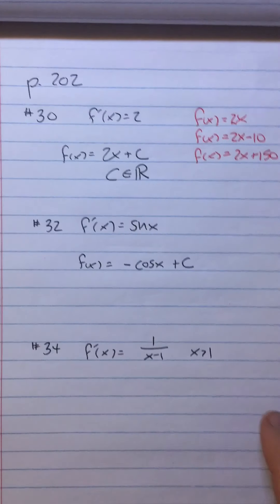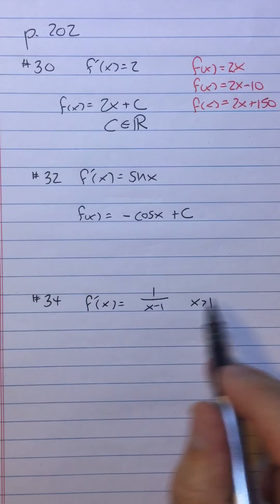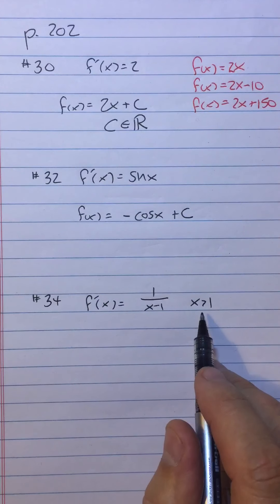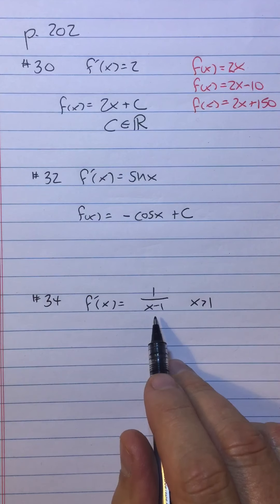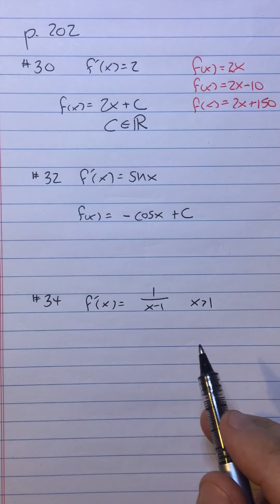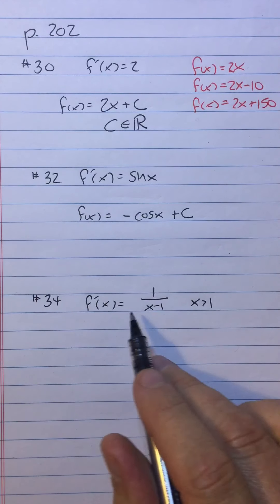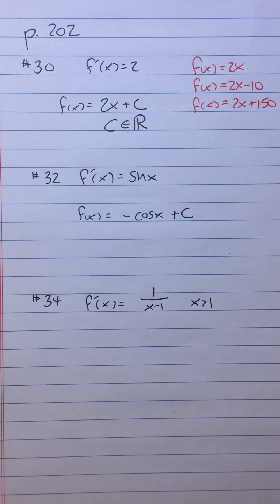All right, how about this one? 1 over x minus 1 with its strange x greater than 1. Well, one thing about the x greater than 1 is it prevents the denominator from being undefined, because the denominator can't be 0. So let's think about what function could have that for a derivative?